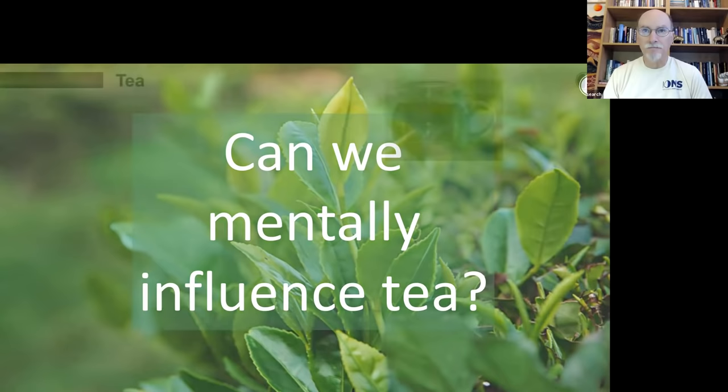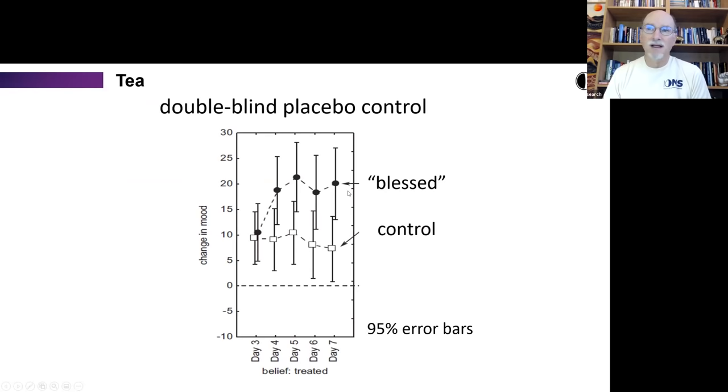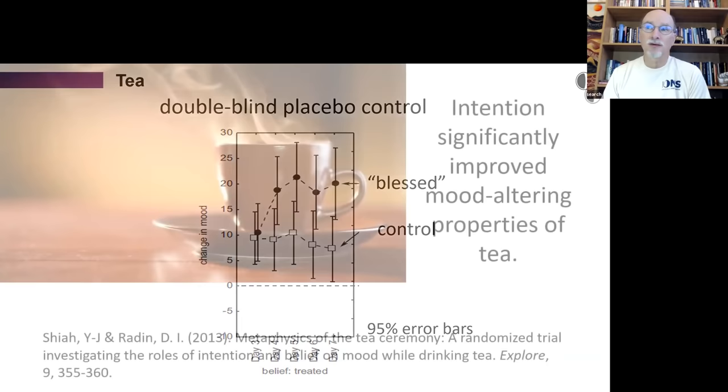Then we decided, can we do the same thing with tea? And so this I did with a colleague in Taiwan, created a big batch of oolong tea, separated it into two batches, asked three Buddhist monks at a temple in Taiwan to do a similar kind of treatment or blessing of one of the batches. I put the tea in little bottles and then recruited a hundred people in each case. And this case it's change in mood. So up means better. So the blessed tea, by the end of the experiment, at the end of the drinking period, the third day, significantly improved mood in people getting the blessed tea than getting the control tea.